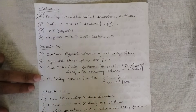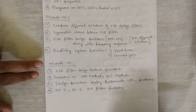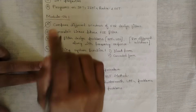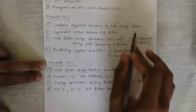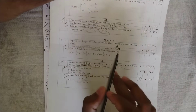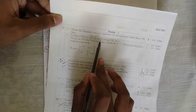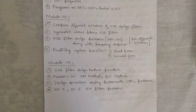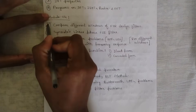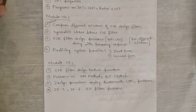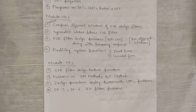From module four, the first question is to compare different windows. This question has appeared in all previous year papers — I have kept the question exactly as it is from previous year papers. In module four: compare different windows used to design FIR filters. This is a fixed question that has appeared for around four to five exam cycles. All the different windows — rectangular, Hamming, Hanning, Bartlett window, and so on — you should list them down. This is a fixed question.